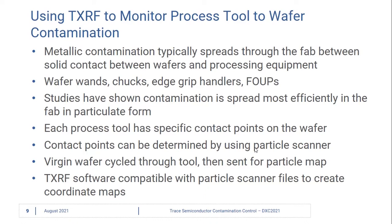edge grip handlers, chucks — the mechanical pieces of the equipment that can transfer contamination. Studies have shown that this contamination is spread most efficiently in particulate form. These particles can flow through the fab and transfer from the tools to the wafers at these specific contact points. Each processing tool has its own contact points with the wafer.